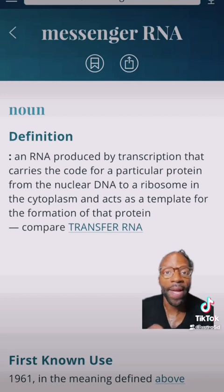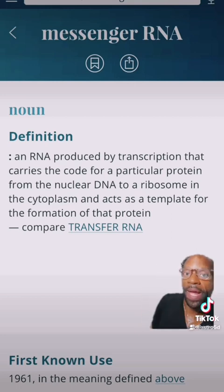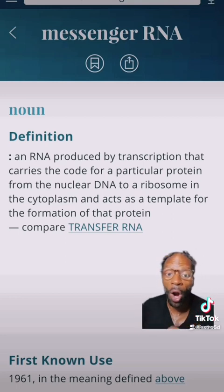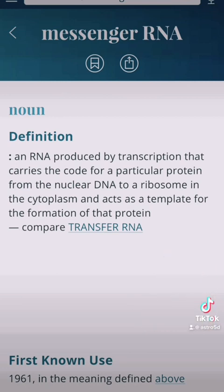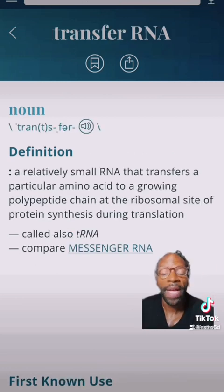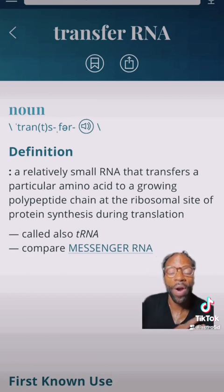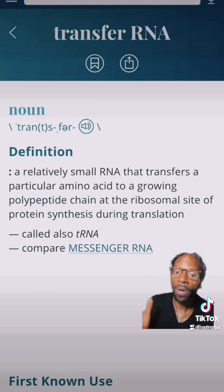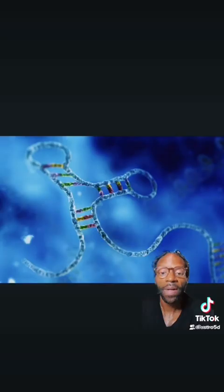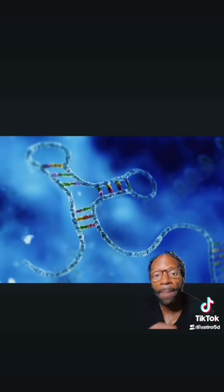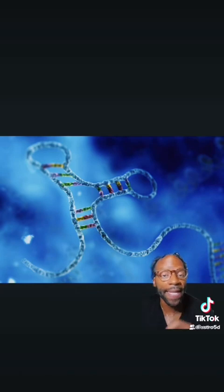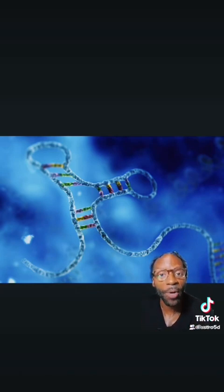With RNA, you have messenger RNA, also known as mRNA. You also have transfer RNA, also known as tRNA. The mRNA is synthesized inside of the nucleus, copied from the DNA code. And the tRNA can be found in the cytoplasm.